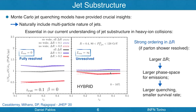The quark-to-gluon difference, because of the different quenching of the Casimirs, is actually contained here, and it does not suffice in this model to describe data. So clearly, there is something pointing to us that there is a multi-prong structure in a jet that feels the effects of the medium and has to be taken into account.